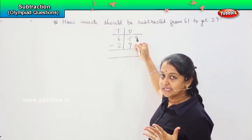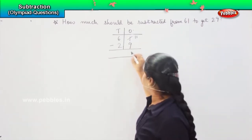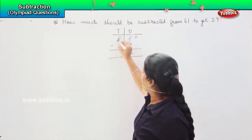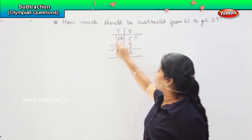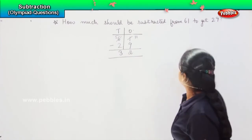So, 11 minus 9 is 2. And this will be reduced by one number. So, 5 minus 2 is 3. So, my answer is 32.